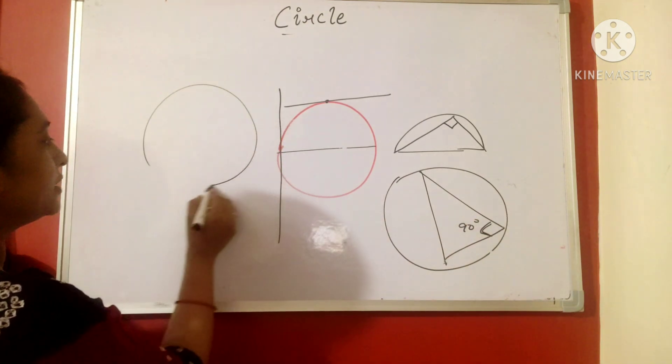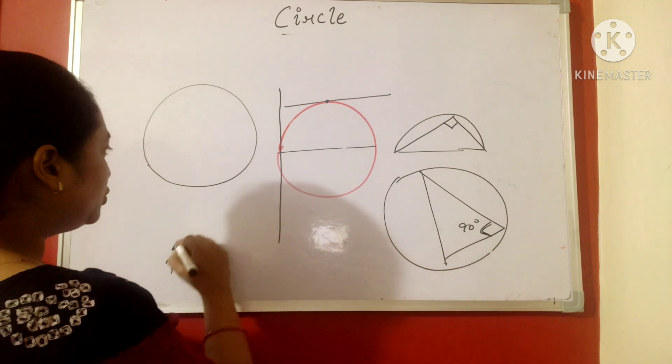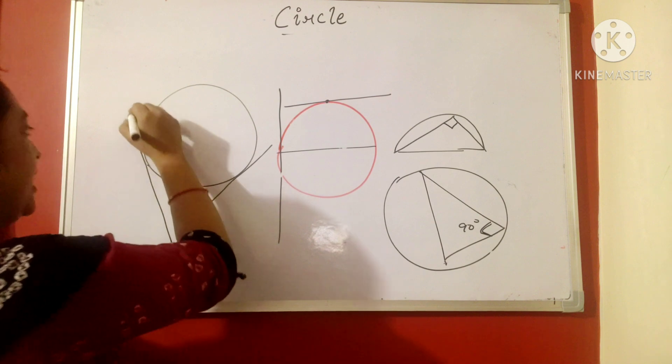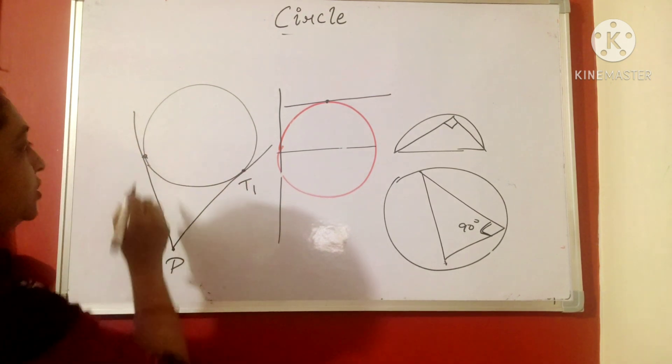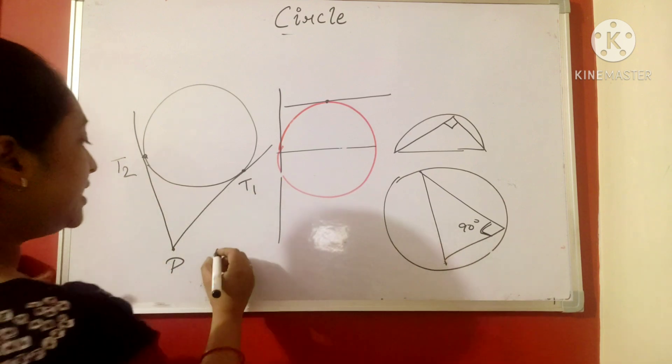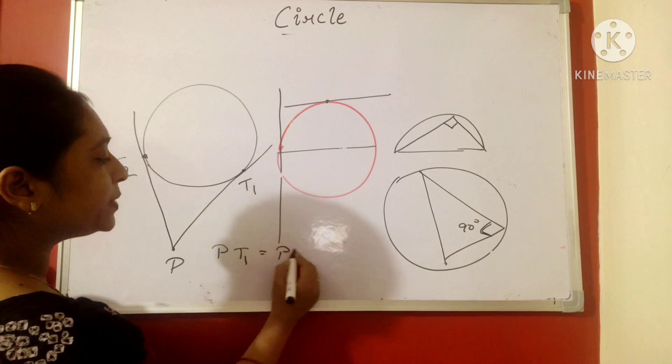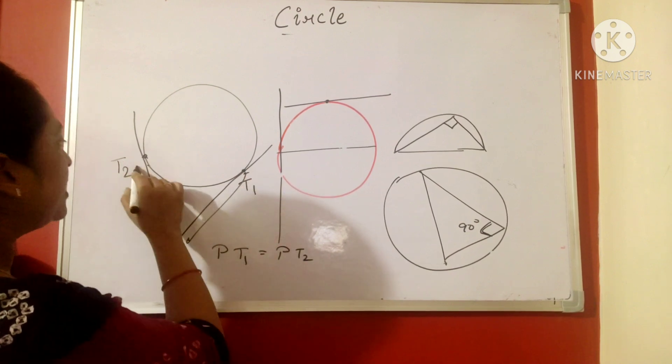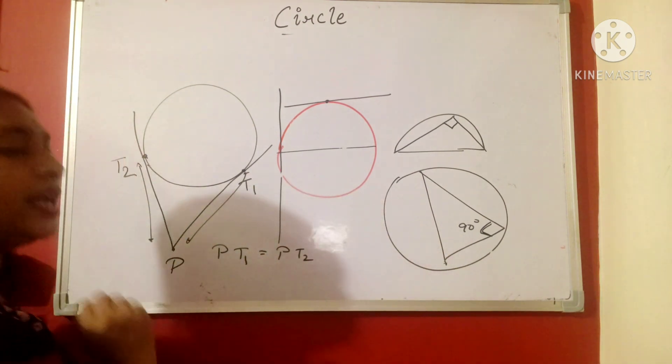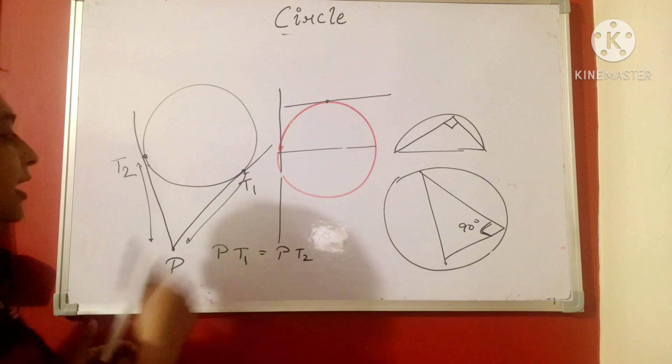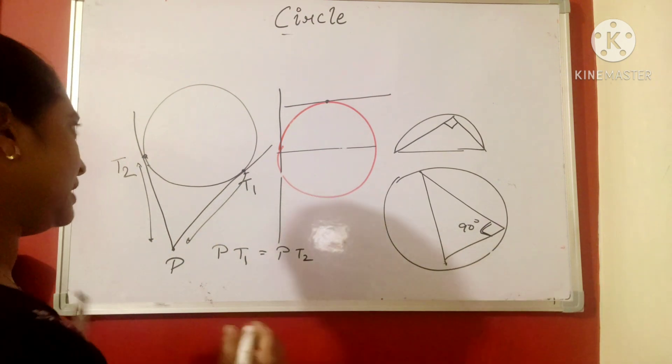Now, if we have a circle and we have an exterior point say P and two tangents are originating, then the distance between the tangent, suppose this is tangent T1, this is tangent 2, then the distance between the tangent 1 and the distance between the tangent 2 is always same. What I said, I just said, if two tangents are originating from one common point, then the distance between these two tangents, the length of these two tangents is the same.